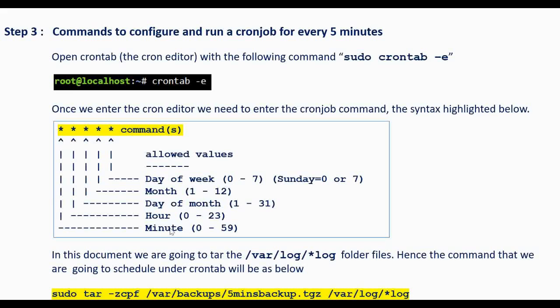The first asterisk represents the minute. The second one is hour, day of the month, month number, and day of the week starting from Sunday at 0. The command to execute is: sudo tar, then /var/backup, the file name where we are putting all the backup data, and the source folder /var/log with *.log. So any file ending with .log will be backed up and stored under the new file name under /var/backup.